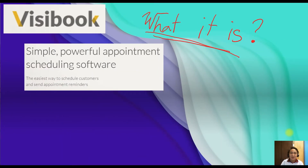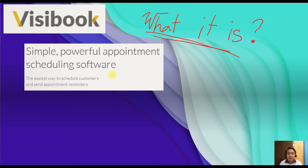Good day everyone and welcome again to Mr. V's tutorial. Today we're going to talk about Busybook. Busybook is a simple, powerful appointment scheduling software — the easiest way to schedule customers and send appointment reminders. You can use Busybook to schedule or book an appointment for a particular event, such as a parent-teacher conference or student-led conference. Students can go to the calendar, select a time, confirm an appointment, and you can also send reminders and message them through the portal.